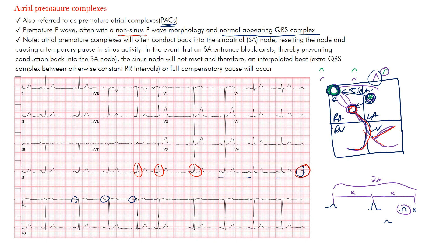PACs are common. They tend to decrease in frequency with age, and are typically benign. You may have some palpitations, and they can trigger re-entrant tachyarrhythmias, which is something to be aware of. Some causes include anxiety, myocardial ischemia, hypokalemia, low magnesium levels, and certain medications such as caffeine, beta agonists, and digoxin toxicity. So that's atrial premature complexes or PACs. You have an ectopic focus firing early with a different P wave morphology, though if it occurs near the sinus node it may actually look the same as the sinus P wave.